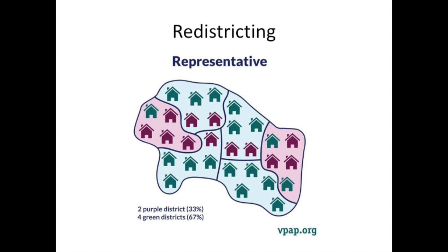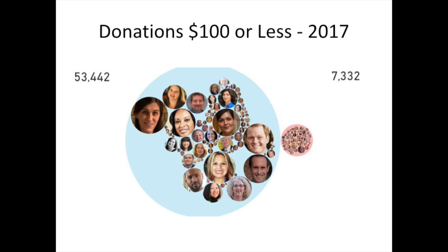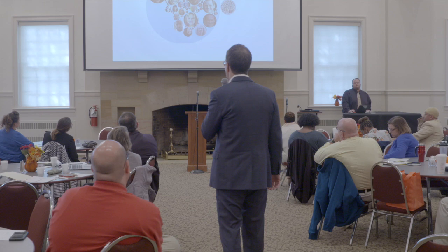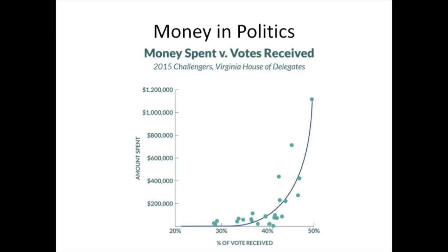Now, money and politics — this is about small donations of $100 or less. If you look back at 2011, if you take all the Republicans and all the Democrats running for the House, they reported about the same number of small donations. Fast forward to the last cycle, and the change was just unbelievable. You had several Democrats with as many small donors as all the Republicans combined. Danica Roem had twice as many as all the Republicans combined. They figured out how to do small-dollar fundraising and energize their base.